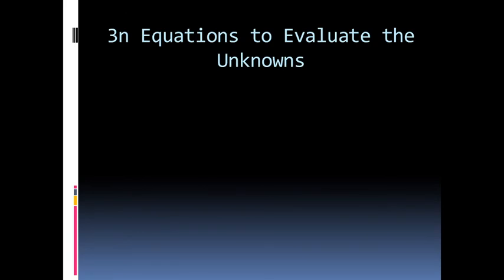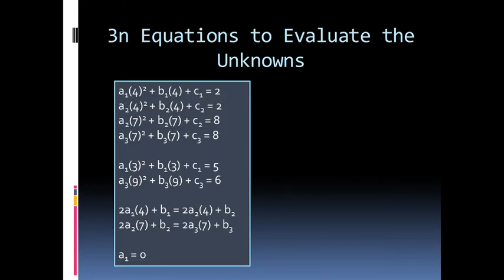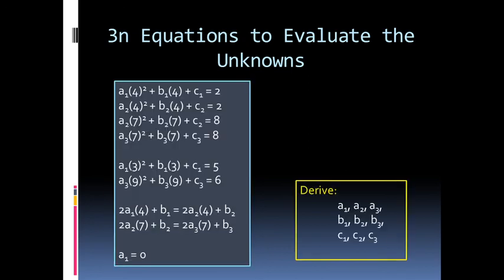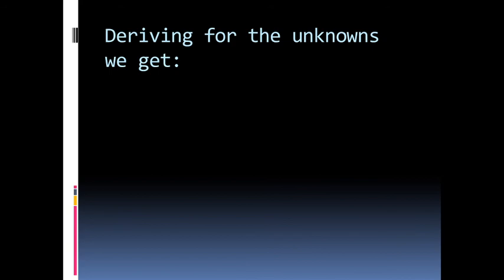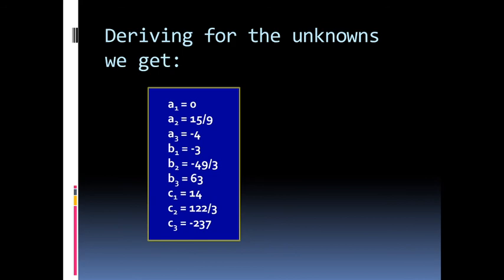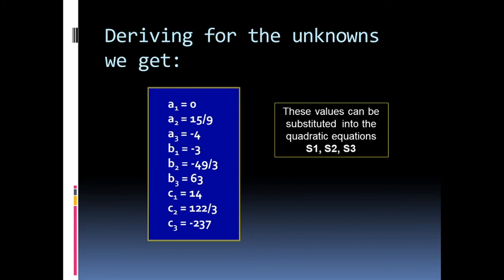The 3n equations to evaluate the unknowns are all the equations we derived above. We need to solve for a1, a2, a3, b1, b2, b3, c1, c2, and c3. By mathematical methods such as substitution and elimination, we obtain the values of these unknowns, which can then be substituted into the quadratic equations s1, s2, and s3.